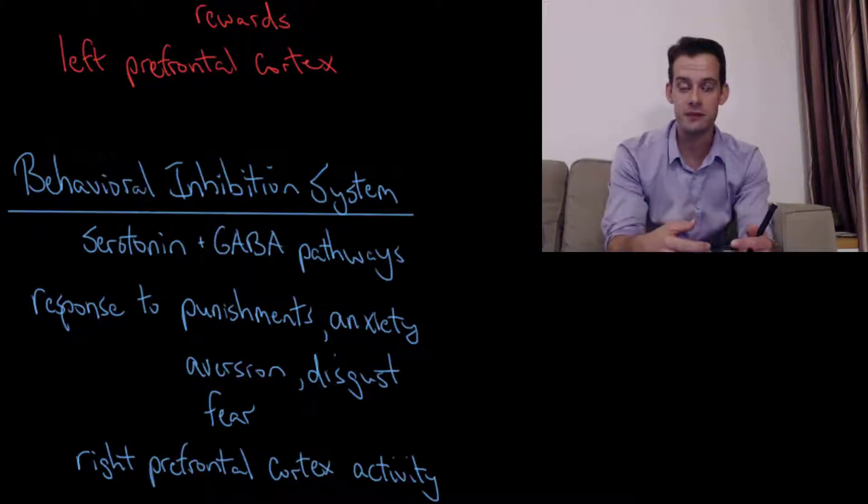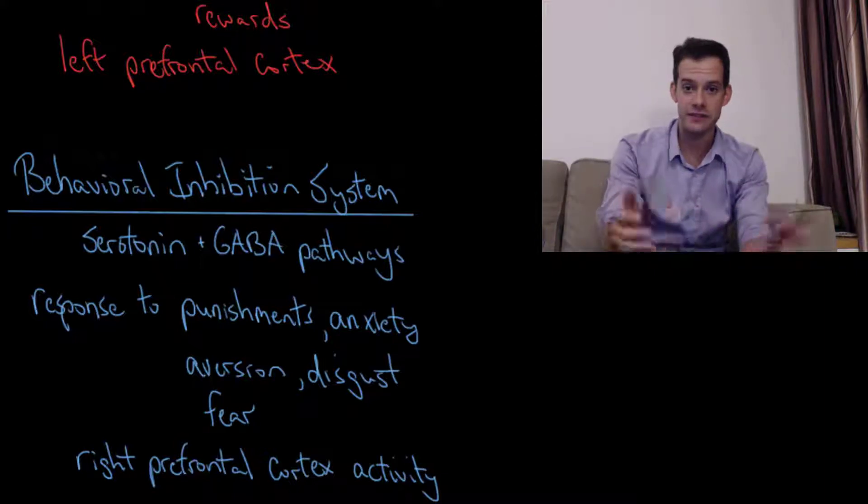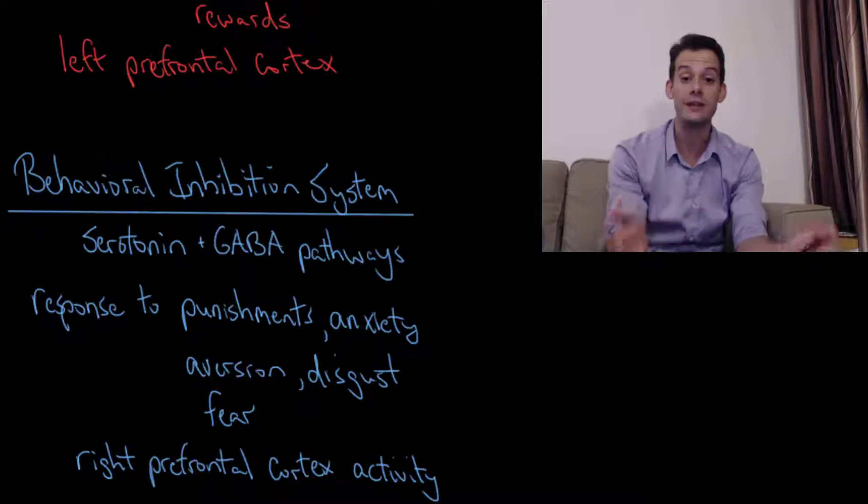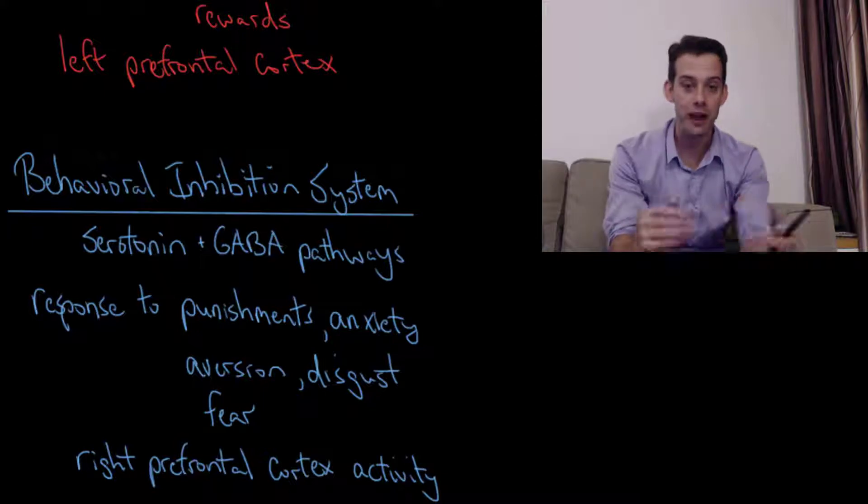And you don't want to have one of the systems be so much stronger than the other. You don't want to have this situation where they're inhibiting all behavior. This is someone with agoraphobia. We won't leave the house because every situation is anxiety provoking and it's all about punishments and fear. And that would be sort of this over activation of this behavioral inhibition system.